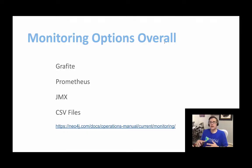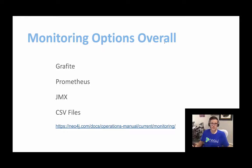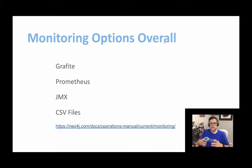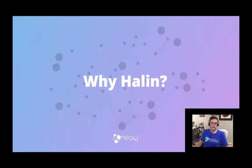Before we get into how we're going to do this, at the product layer, Neo4j exposes a couple of different options for how you can get data out of the product and monitor it from the outside. Those options are basically Graphite, Prometheus, JMX, and CSV files. There's a link in the operations manual on how those different options work and how to configure them. Essentially, these are information streams that Neo4j produces at all times that you can pipe into any downstream tool to do the care and feeding of a Neo4j cluster.